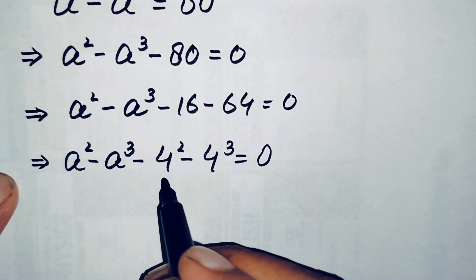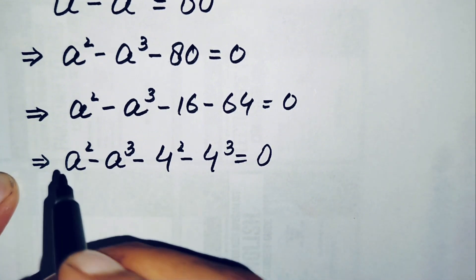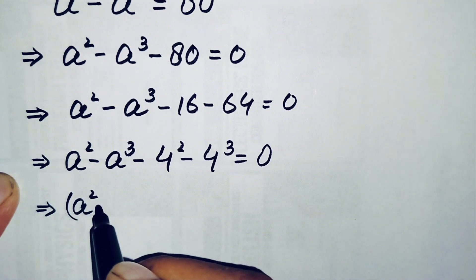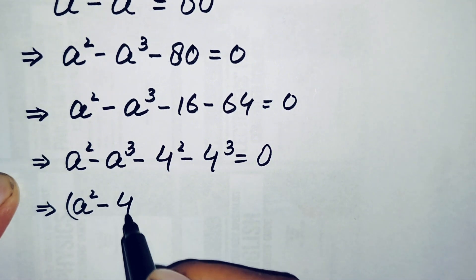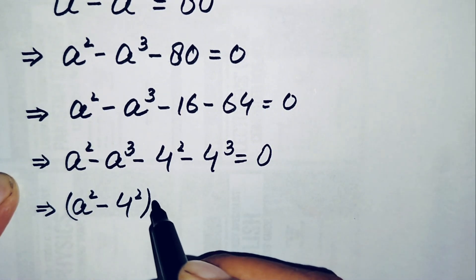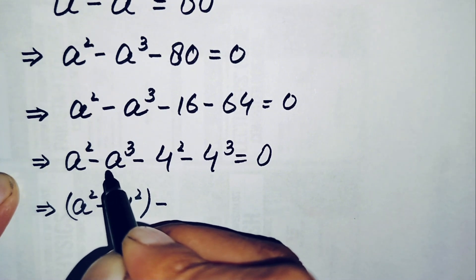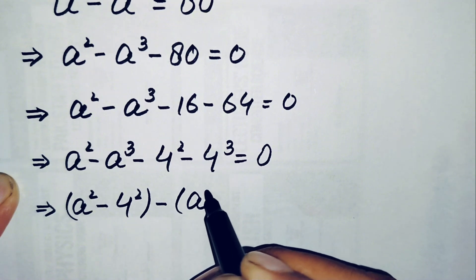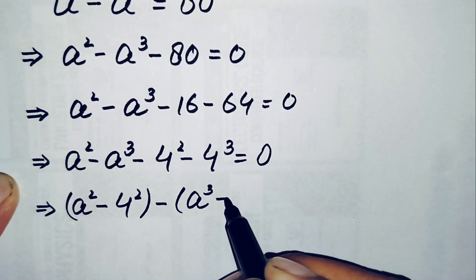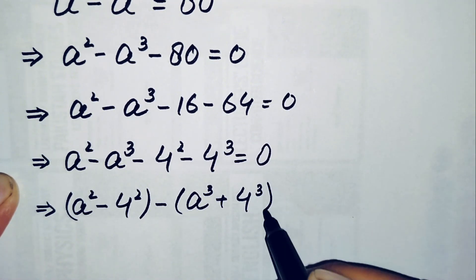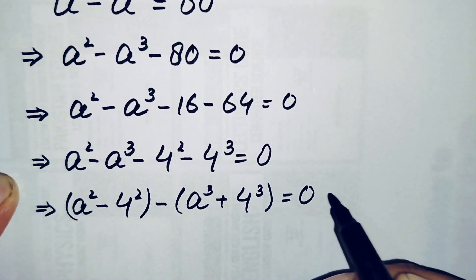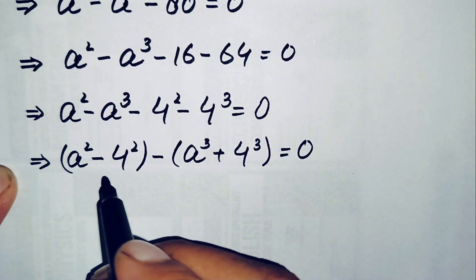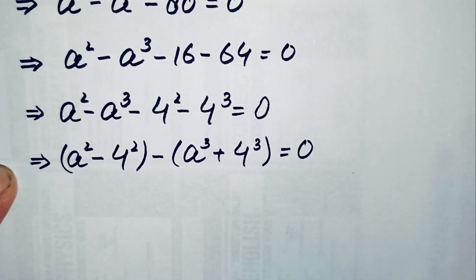Now we will combine the squared terms and the cubic terms with each other. So this will become a squared minus 4 squared. Combining those two terms, we take out the negative sign, and this will become negative a cubed plus 4 cubed, which equals 0.